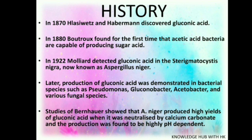History: In 1870, Hall, Svetser, and Habermann discovered gluconic acid. In 1820, Botox found for the first time that acetic acid bacteria are capable of reducing gluconic acid. In 1922, Molay detected gluconic acid in Sterigmatocystis nigra, currently known as Aspergillus niger.